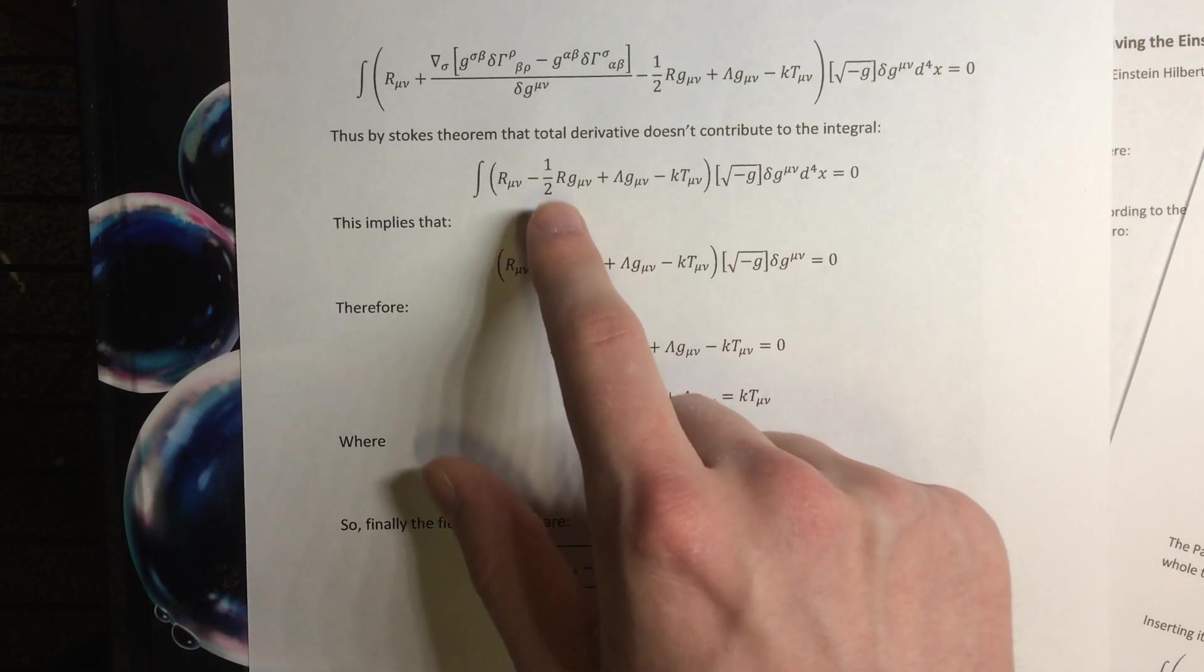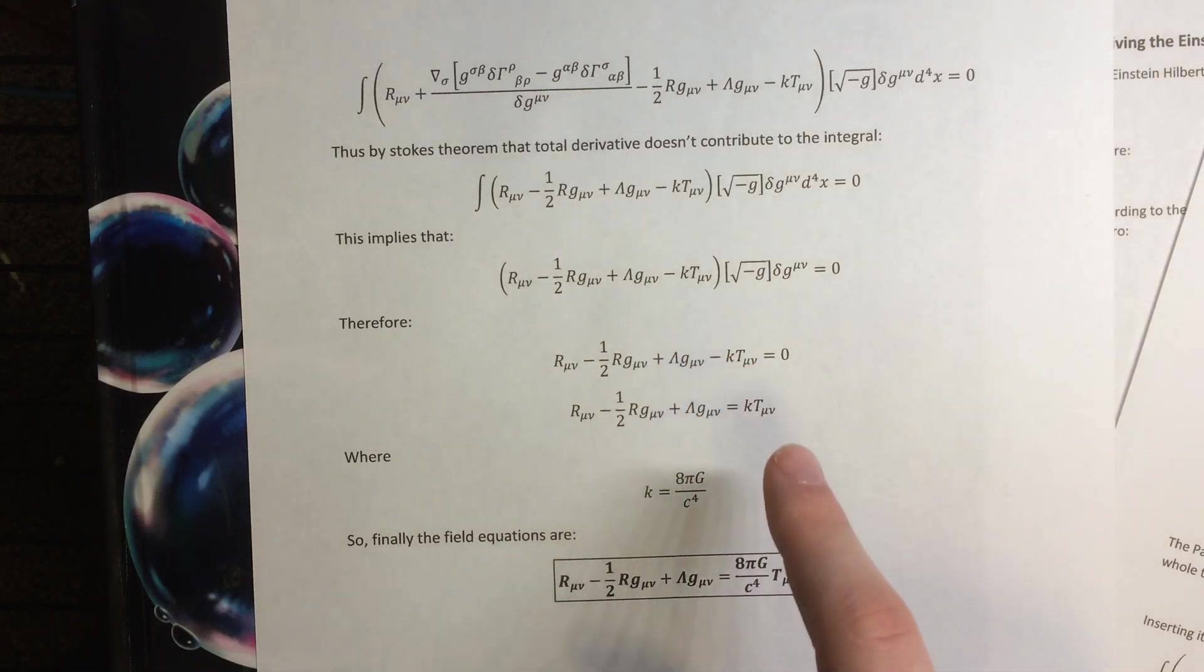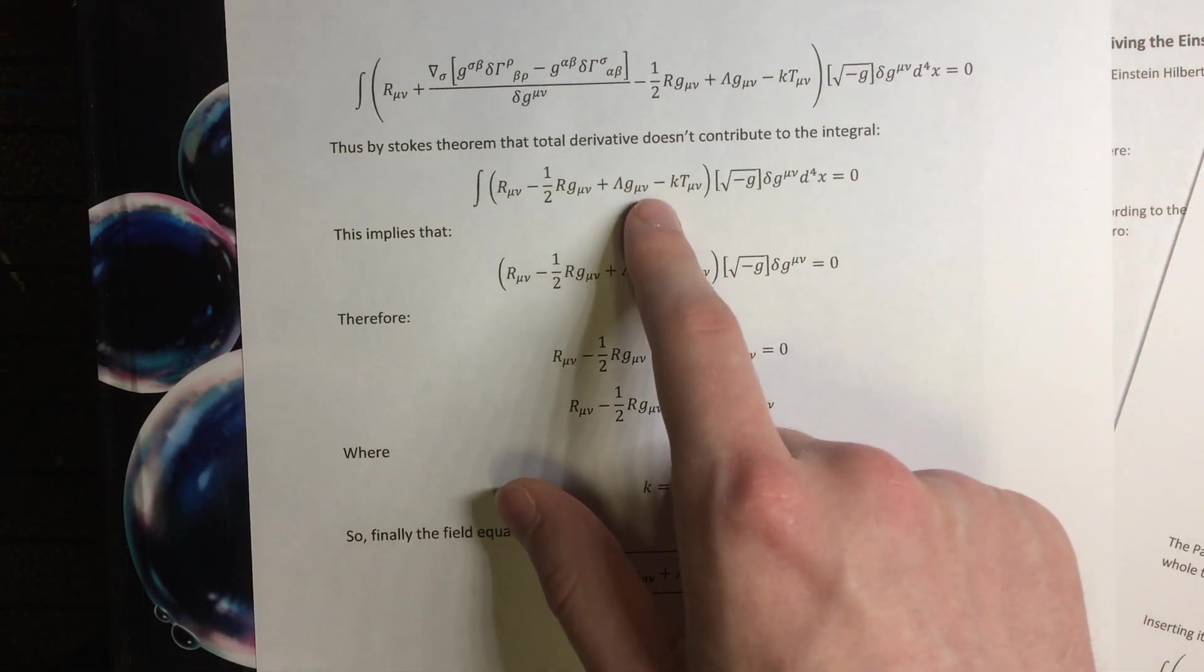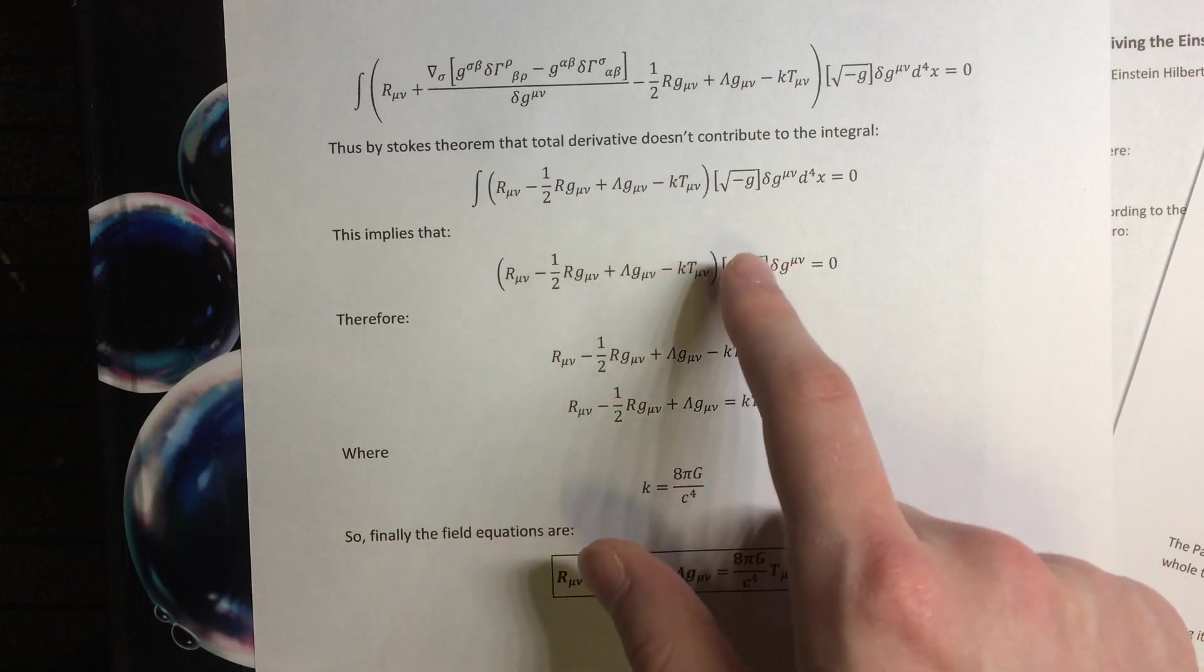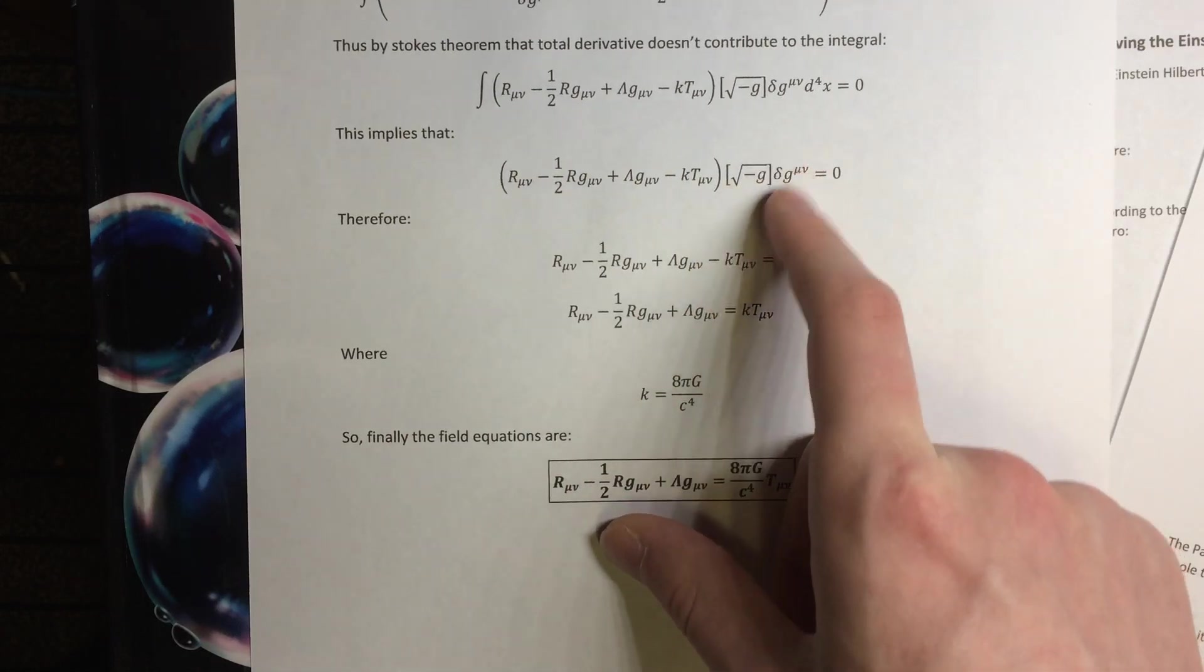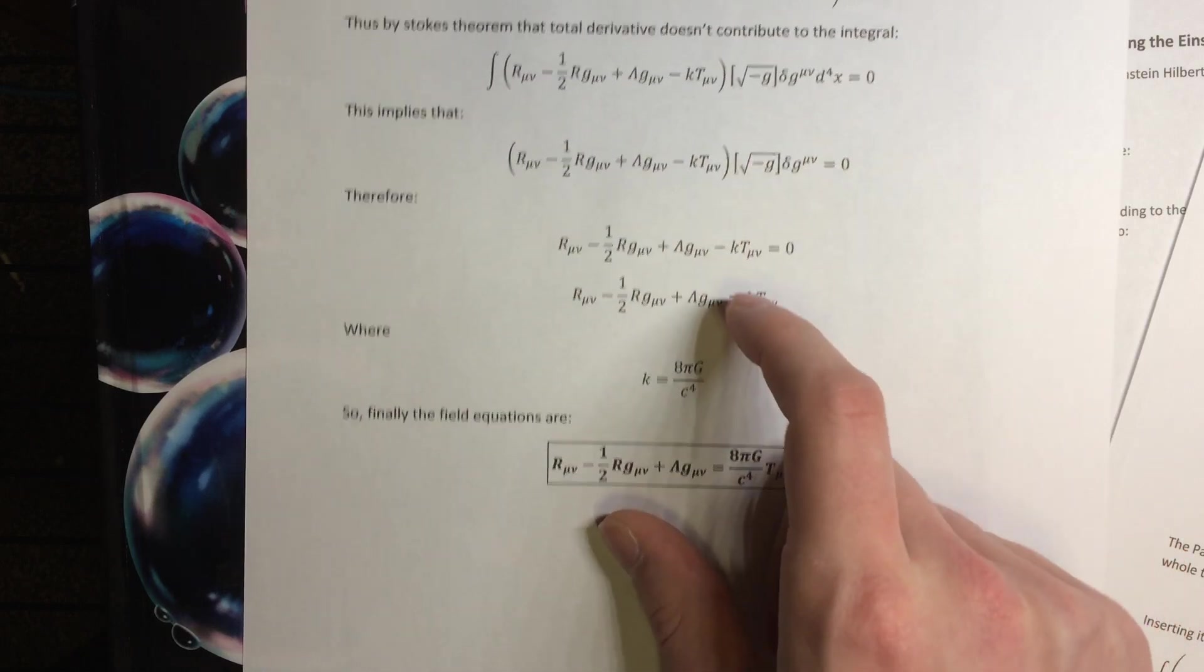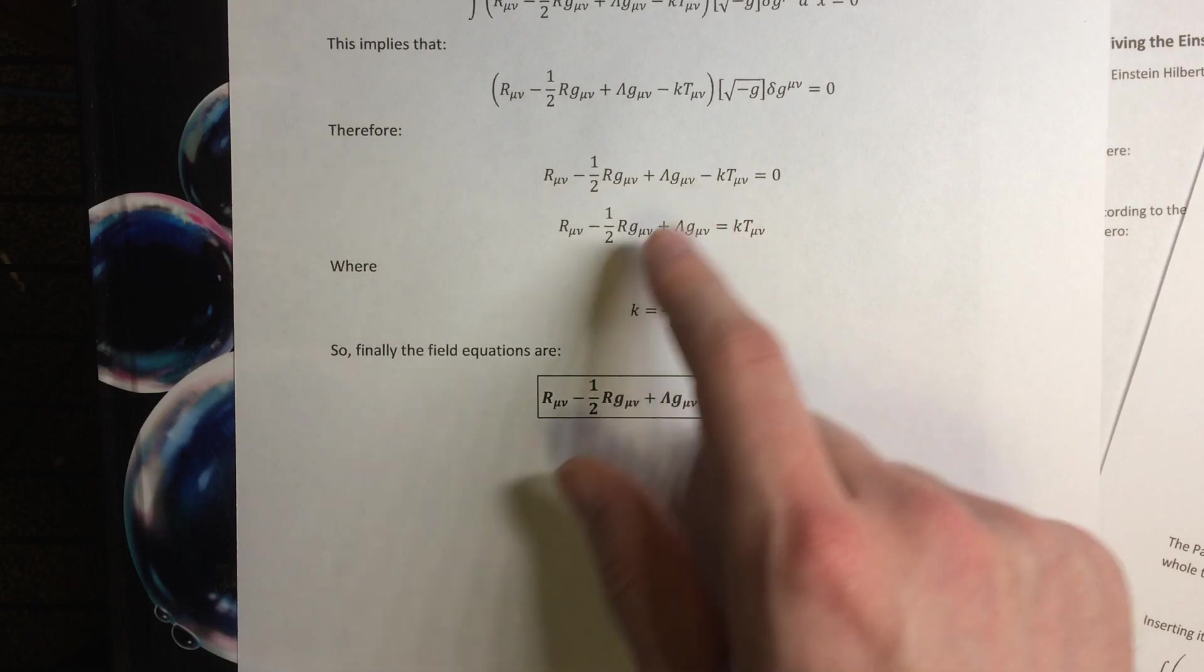So then by Stokes theorem it vanishes, and we've got the Einstein field equations in here. So, because this should be general for whatever bounds you're putting on the integral, then this implies that, but this should be true for non-zero values of this, these quantities here, so then we have, finally, the Einstein field equations.